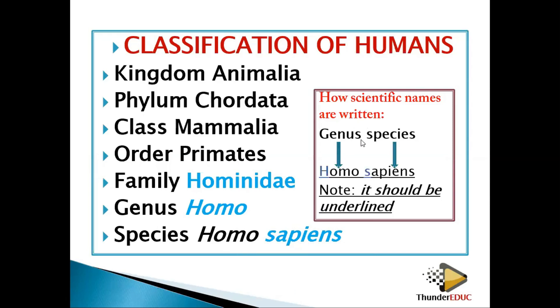When writing a scientific name, the first letter of the genus must be a capital letter, and the first letter of the species name must be a small letter. So in Homo sapiens, 'H' is a capital letter while 's' is a small letter.